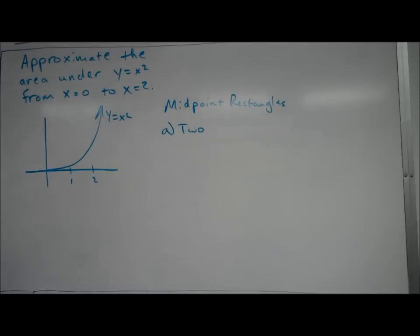So we're using two rectangles on the interval from zero to two, so each one has a width of one. That means our first one goes from zero to one. The midpoint of that interval is one-half, and this one's pretty easy to figure out. If it's a little weirder, you can take your left endpoint and your right endpoint, add them together and divide by two, and that will give you the midpoint.